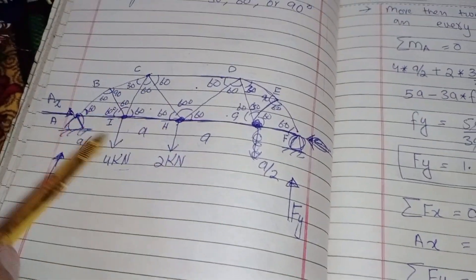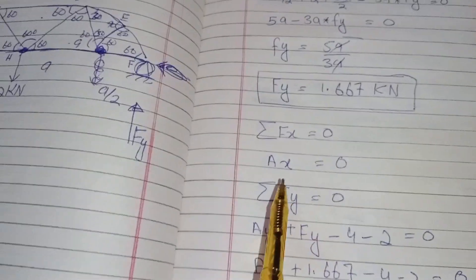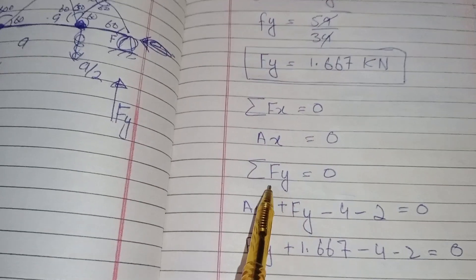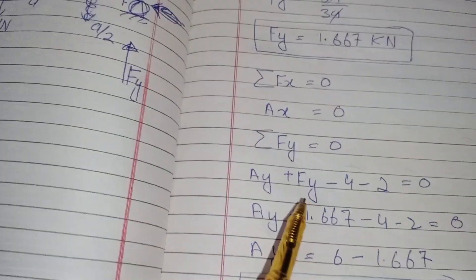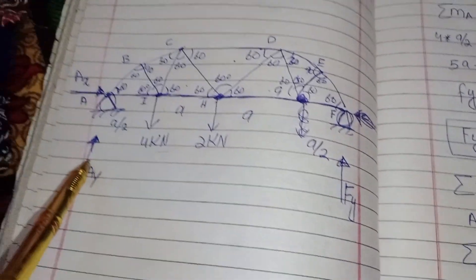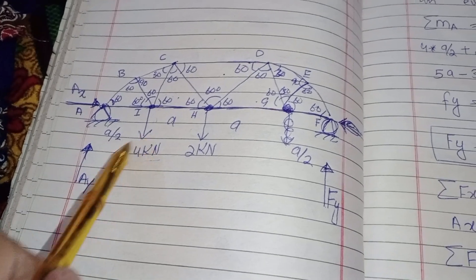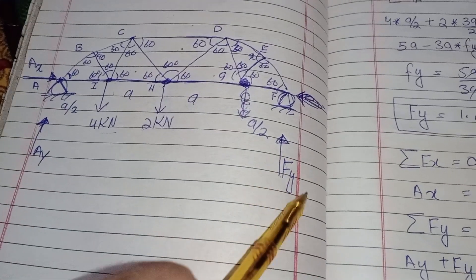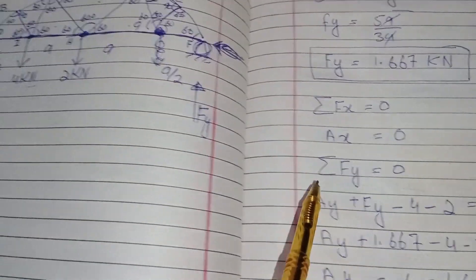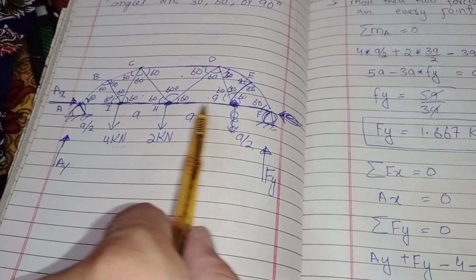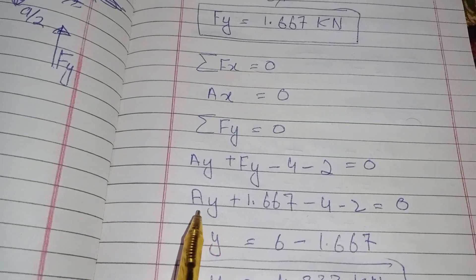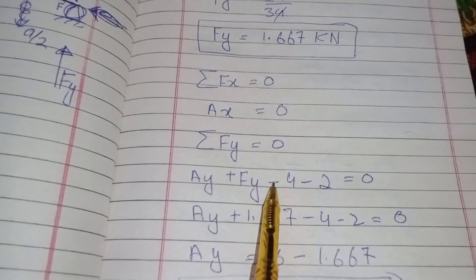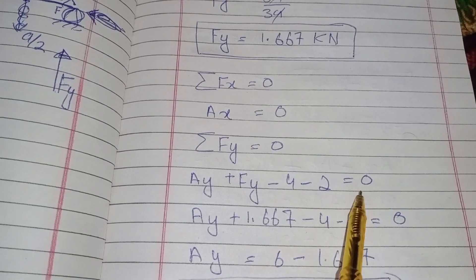Summation of all horizontal forces equals zero — there is only Ax, so Ax = 0. Summation of all vertical forces equals zero: there are four vertical forces acting on the truss — Ay, Fy, 4 kN, and 2 kN. So Ay + Fy − 4 − 2 = 0.